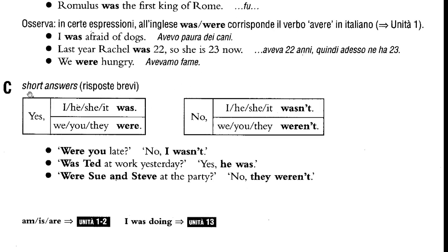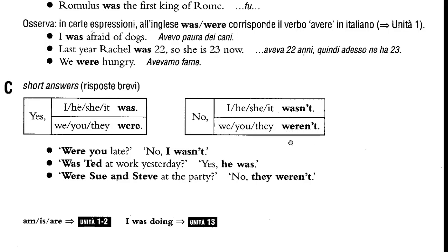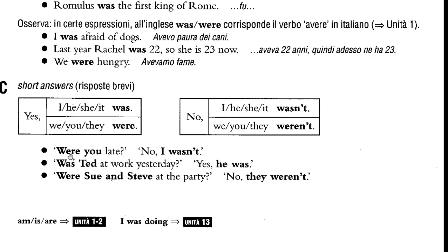For the short answers: positive — yes, I was / he was / she was / it was, or yes, we were / you were / they were. Negative — no, I/he/she/it wasn't; no, we/you/they weren't. For example, if the question is 'were you late?' you say 'no, I wasn't'. If the question is 'was Ted at work yesterday?' the answer is 'yes, he was'. And if the question is 'were Sue and Steve at the party?' the answer is 'no, they weren't'.